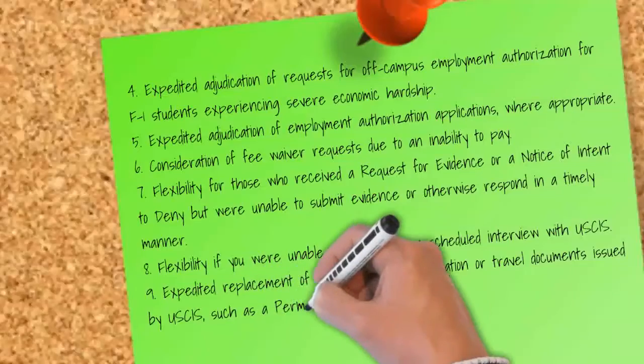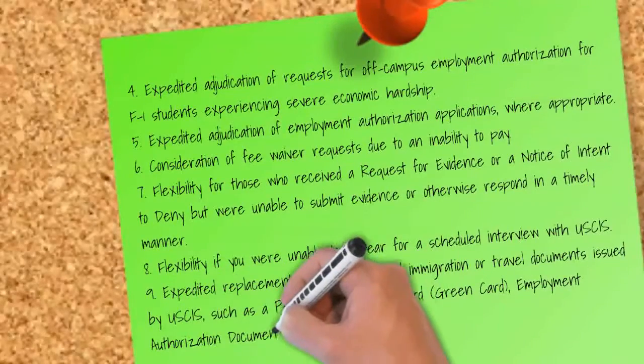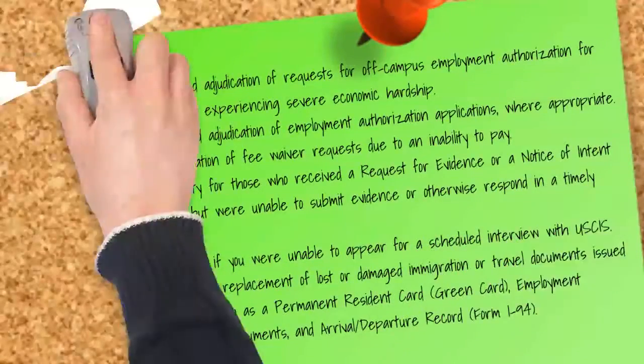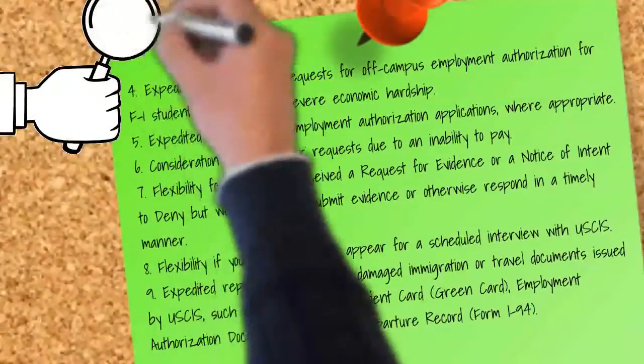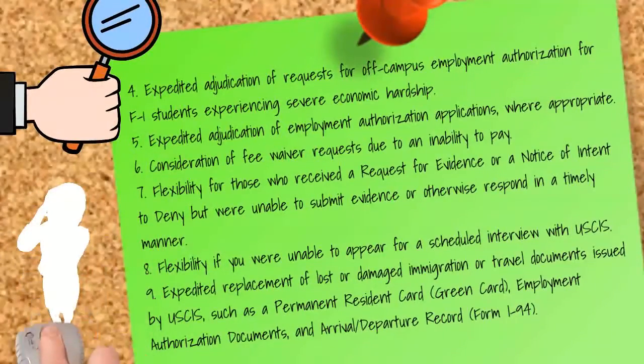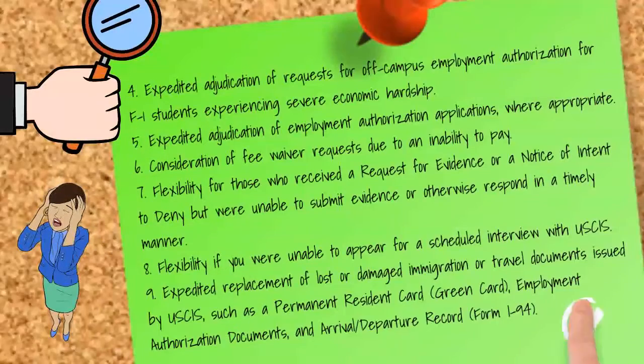Eighth, flexibility if you were unable to appear for a scheduled interview with USCIS. Ninth, expedited replacement of lost or damaged immigration or travel documents issued by USCIS, such as a permanent resident card, employment authorization documents, and arrival or departure record, Form I-94.